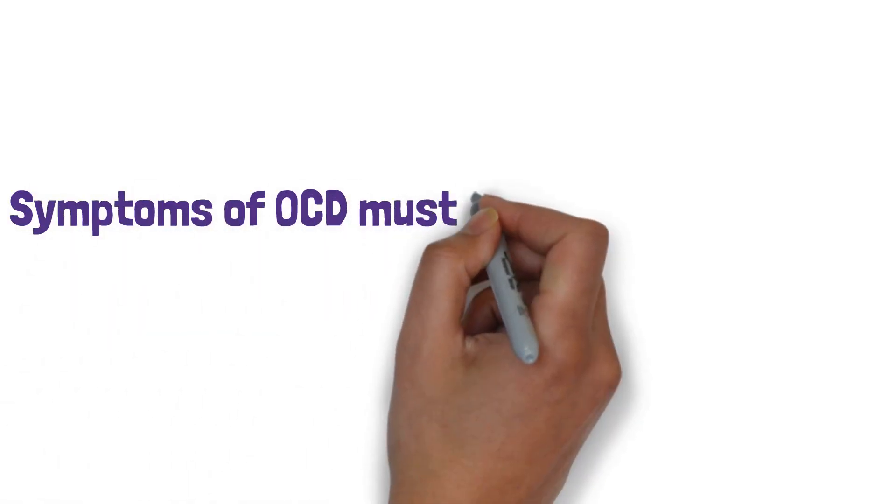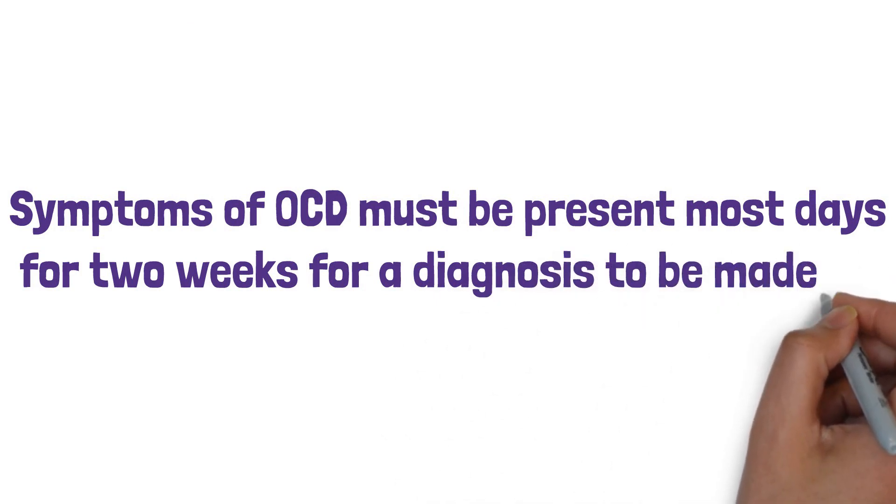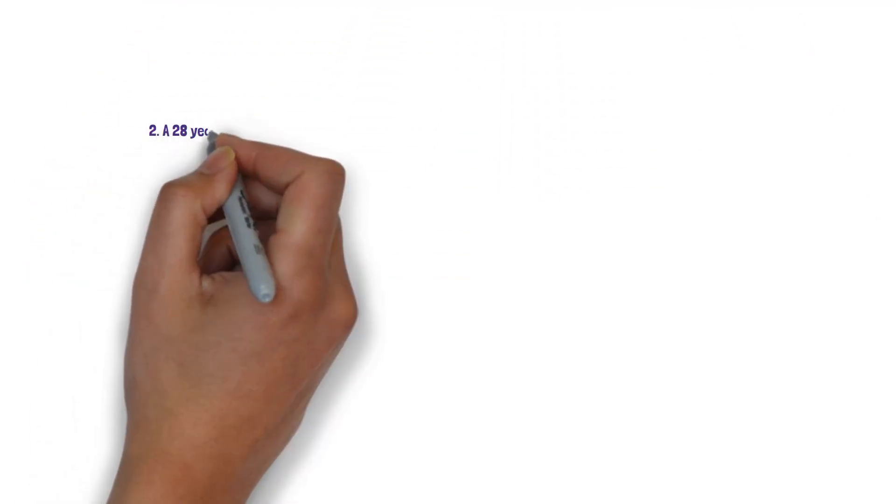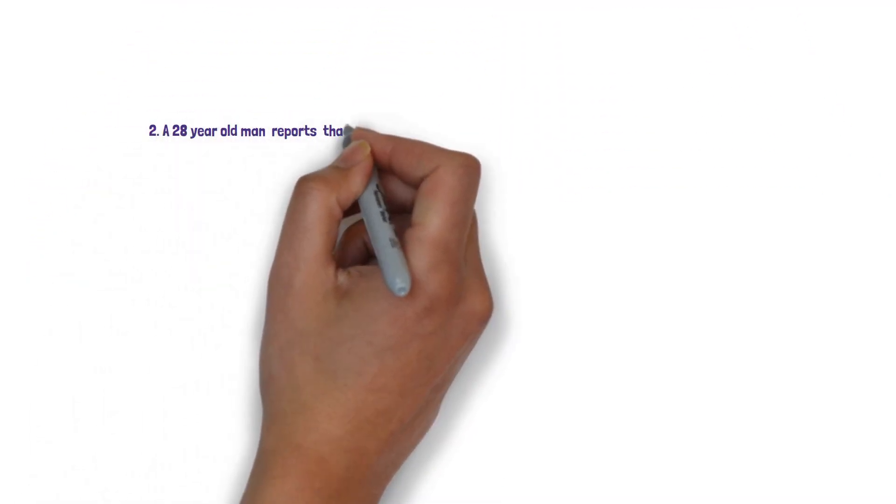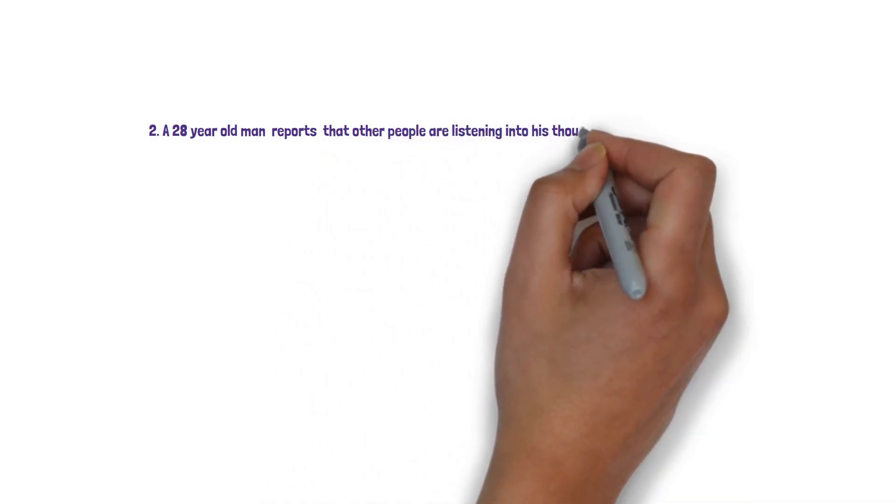For OCD to be diagnosed it needs to be present most days for two weeks. So therefore the answer D is not consistent with the underlying diagnosis. The correct answer here is D because symptoms must be present for two weeks not one month prior to diagnosis. Now moving on to question 2.